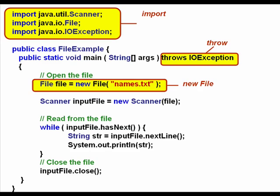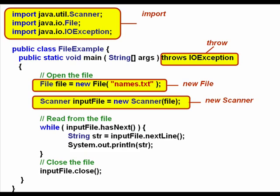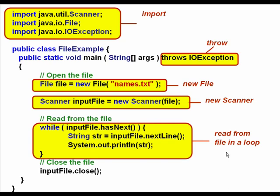The next step is to instantiate a File object and pass through it the name of the physical file on your hard drive that you're going to be reading from. Then instantiate a new Scanner object. Instead of passing the Scanner constructor System.in like we normally do when reading from the keyboard, when reading from a file we pass the File object. Then read from the file in a loop, either knowing how many items are in it, or reading until the end of file using the Scanner method hasNext.